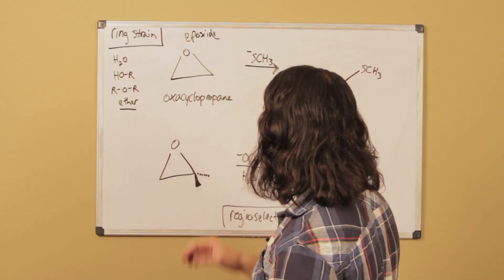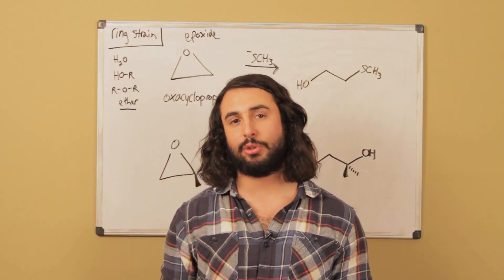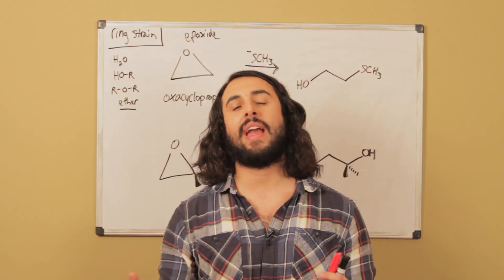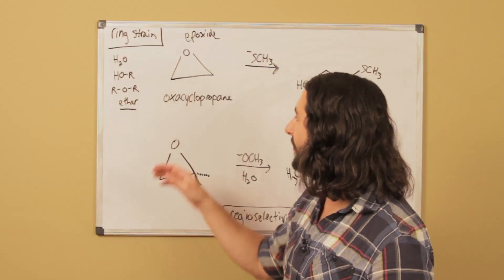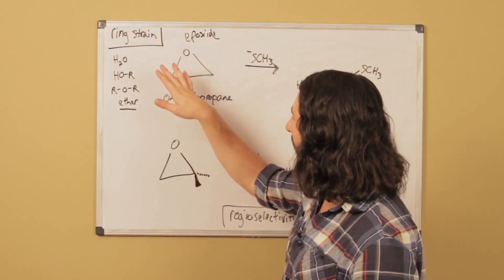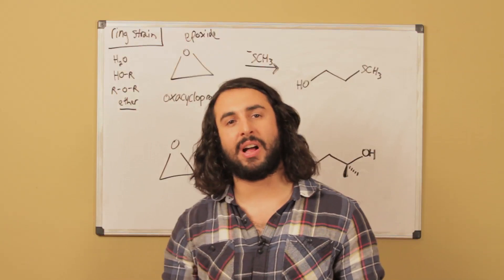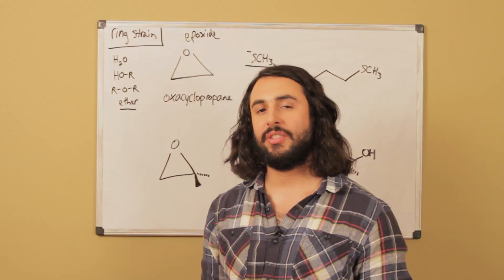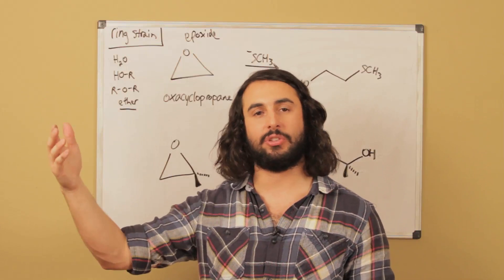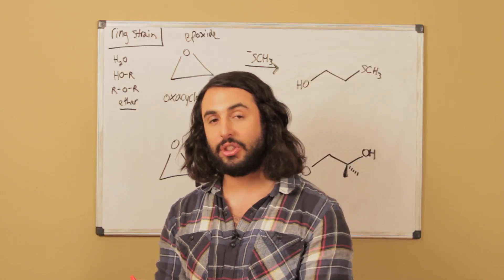What we need to understand about an epoxide is that it is susceptible to nucleophilic attack in a way that we might not expect for simple carbon-oxygen bonds. We might look at this carbon-oxygen bond and think yes that's a polar bond, but it's not any more polar than your typical carbon-oxygen bond from a hydroxyl group.